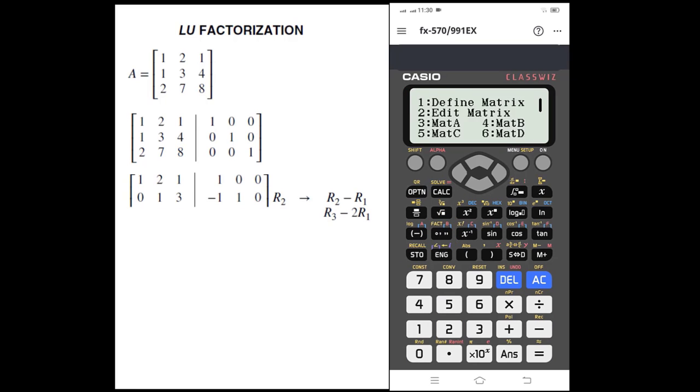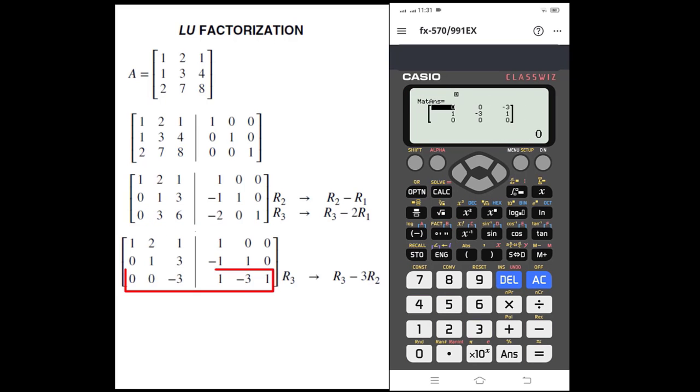In today's tutorial, we will learn the LU factorization process of a 3x3 matrix using the Casio FX991EX+. This method works fine for higher dimensions too. Let's say we are given a matrix A. We have to write matrix A in augmented form along with the identity matrix as given in the figure.